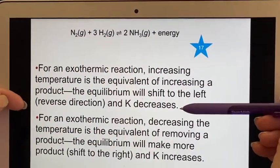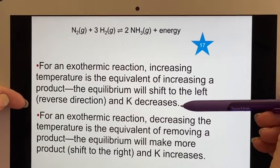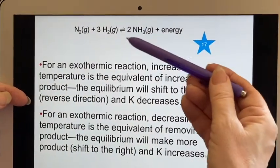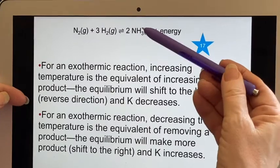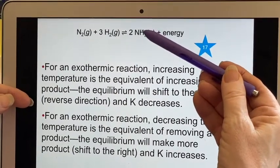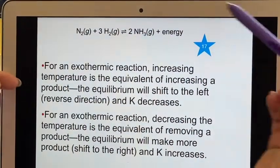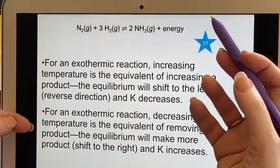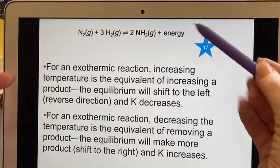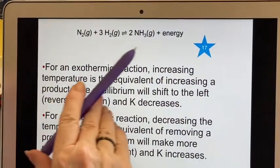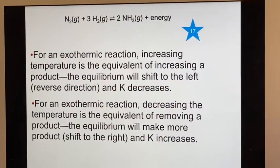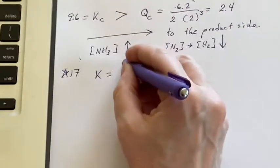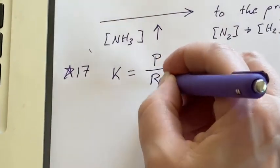That means that K is going to end up being a smaller number because the things that are involved in K, this one will be getting smaller, that's in the numerator, and these will be getting larger and they are in the denominator. If we decrease the temperature, it's like we took a product out and that will make the equilibrium want to shift more to the right. But you can just think of K as being products over reactants, and then the change in temperature will affect the equilibrium.